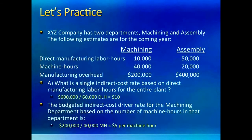Let us try a two-department problem. We are given two cost drivers: labor hours and machine hours, and the estimated manufacturing overhead costs for each department. In part A you have to calculate a budgeted manufacturing overhead rate using direct labor hours as the allocation base. So we total up the manufacturing overhead costs of the two departments and divide by the correct allocation base. In one department it would be divided by direct labor cost, and in the second it would be divided by machine hours.